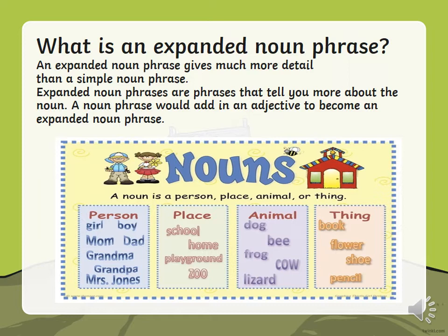What is an expanded noun phrase? An expanded noun phrase gives much more detail than a simple noun phrase. Expanded noun phrases are phrases that tell you more about a noun. A noun phrase would add in an adjective to become an expanded noun phrase. For those of you who've forgotten, a noun is a person, place, animal, or thing. Here are some examples of nouns. An expanded noun phrase describes a noun — it adds an adjective to the noun.